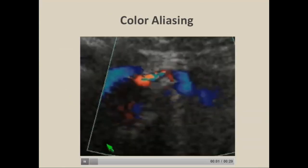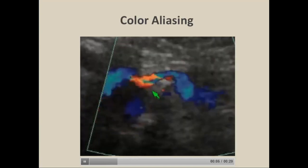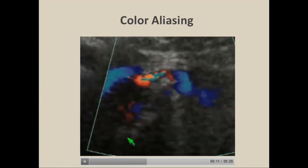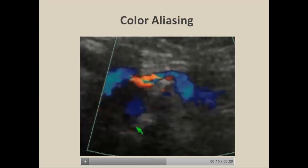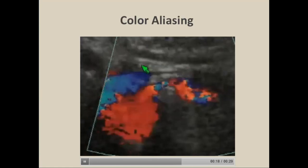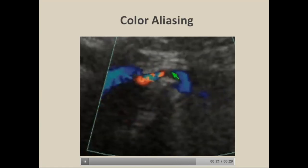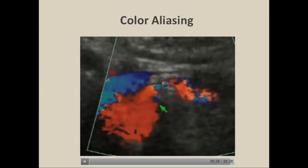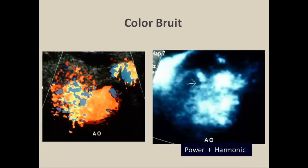Here's an example in real time showing aliasing near the origin of the left renal artery — a focal color change where the color wraps around from red to yellow to white to blue as it crosses the top of the velocity scale. You can also appreciate a bruit artifact from perivascular tissue vibration caused by very high-velocity flow striking the tissue. Here's another example of a color bruit artifact indicating significant stenosis at the origin of the right renal artery. Using a combination of power Doppler and harmonic imaging reduces that artifact, revealing a very tight focal stenosis at the origin.